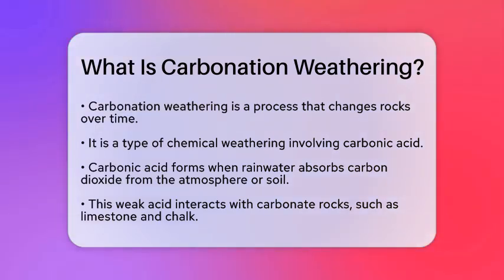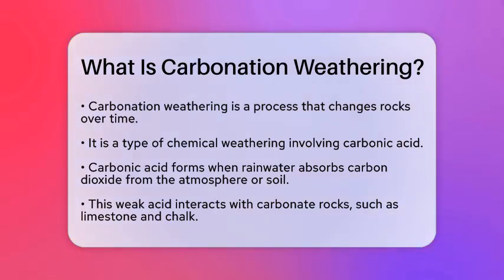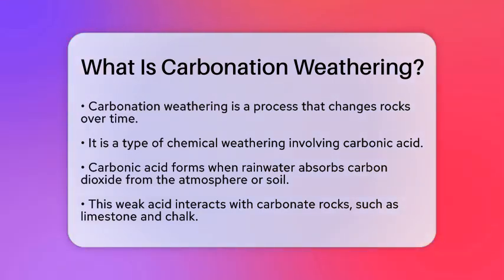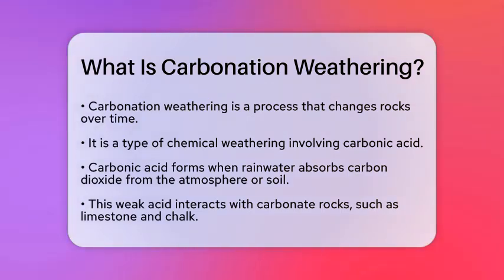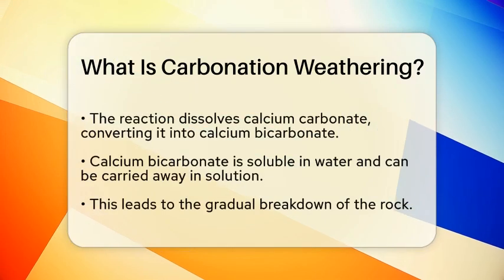This process is a type of chemical weathering that occurs when carbonic acid interacts with certain rocks, particularly carbonate rocks like limestone and chalk. When rainwater falls, it can absorb carbon dioxide from the atmosphere or soil. This combination creates a weak acid known as carbonic acid. This slightly acidic water is key to the carbonation weathering process.